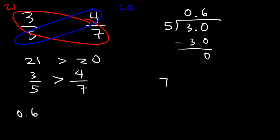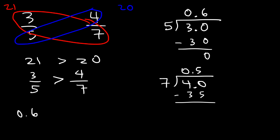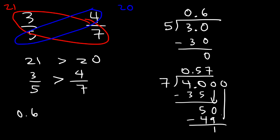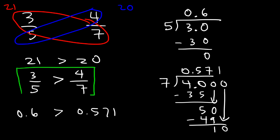Now let's try 4 over 7. 7 goes into 4 zero times, so add a decimal. 7 goes into 40 five times — 7 times 5 is 35, and 40 minus 35 is 5. Bring in another 0: 7 goes into 50 seven times — 7 times 7 is 49. Bring another 0: 7 goes into 10 one time. So 4 over 7 is 0.571. Since 0.6 is greater than 0.571, we confirm that 3 over 5 is larger than 4 over 7.